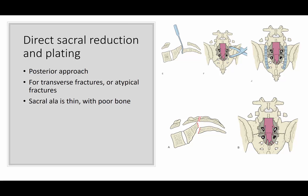Let's move on to direct sacral reduction and plating. This is done fairly infrequently, through a posterior approach. You may do it for a transverse fracture or an atypical fracture that needs to be opened and reduced. The problem is the sacral ala is thin. Plates are typically placed posteriorly on the sacral ala. For an atypical fracture where you need direct reduction and direct fixation, you may have to plate it to prevent loss of reduction.